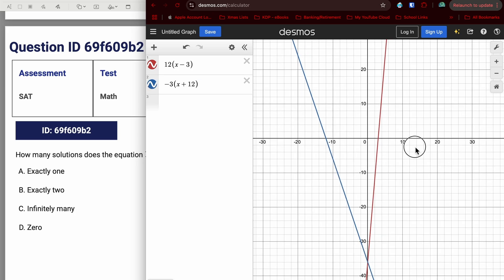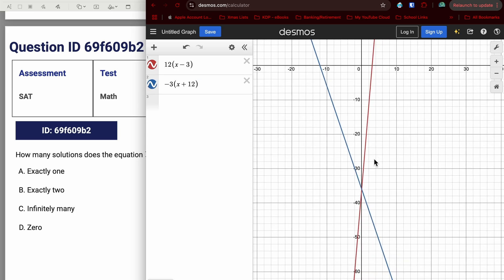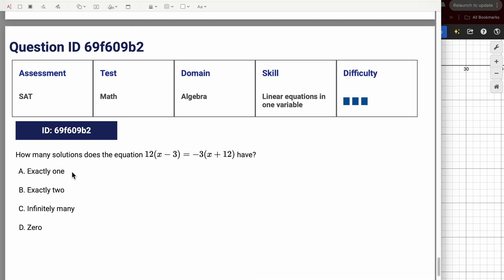Minus my talking. That would have been really fast. I can clearly see they cross. They cross in one point. It did not ask for what the solution is. It asks for how many. It crosses in only one spot. So it's exactly one solution.